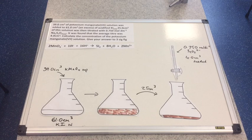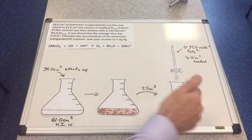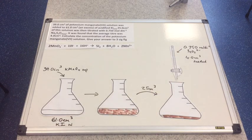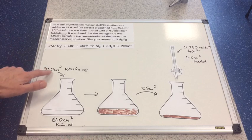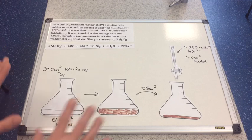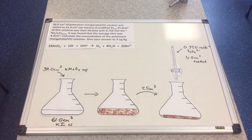The tricky part here: 25 cm³ of that solution is taken out and used in the titration. The thiosulfate concentration is 0.75 mol dm⁻³ and the endpoint titre is 4 cm³. We have to work out the concentration of the original KMnO4 solution. Pause the video and have a go if you'd like.